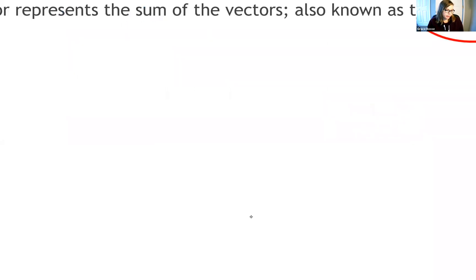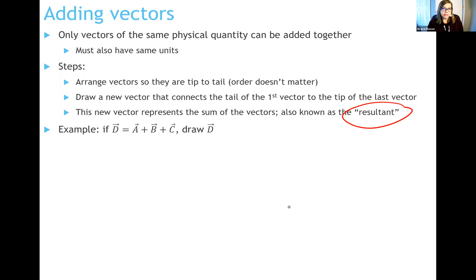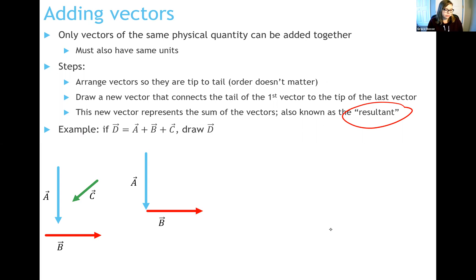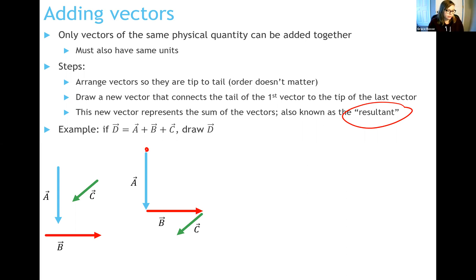Here's an example. I have three vectors A, B, and C, and I'm going to add them together to get vector D. I arrange them tip to tail: here's vector A translated over, then I translate vector B so its tail starts at the tip of vector A, then vector C so its tail is at the tip of vector B. Now I draw the resultant D, which starts at the tail of vector A and ends at the tip of vector C. Vector D is not tip to tail with the others because it's not being added — it is the resultant.